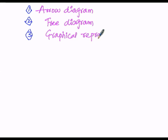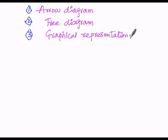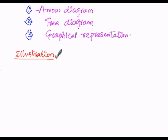Before going to learn about the three topics — that is, the arrow diagram, tree diagram, and graphical representation — first of all, let us find out the Cartesian product of two sets by means of one illustration.